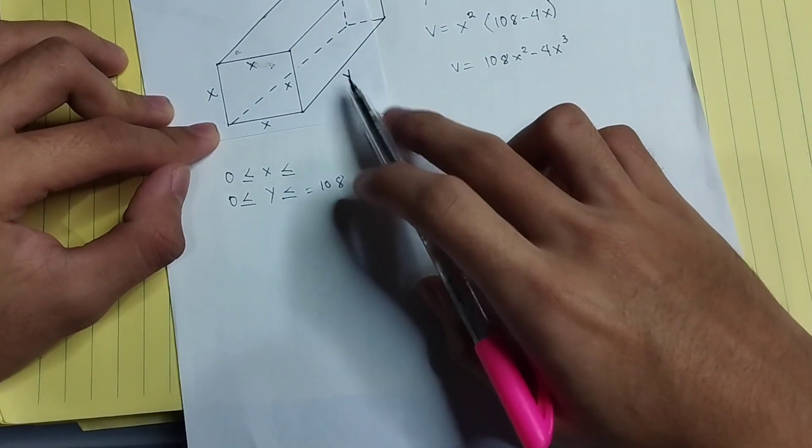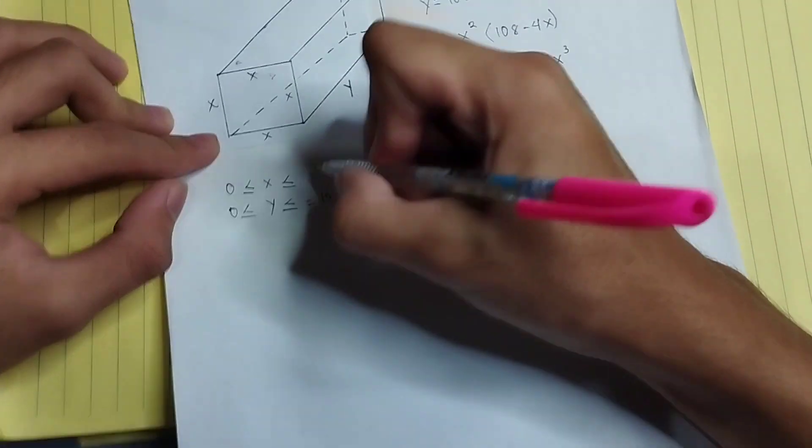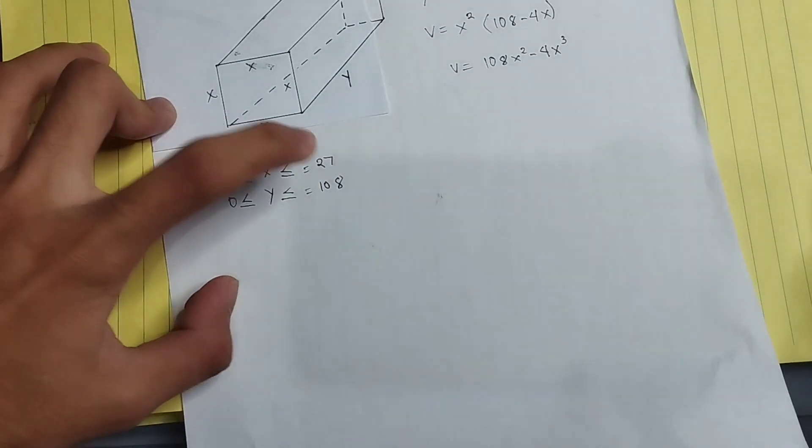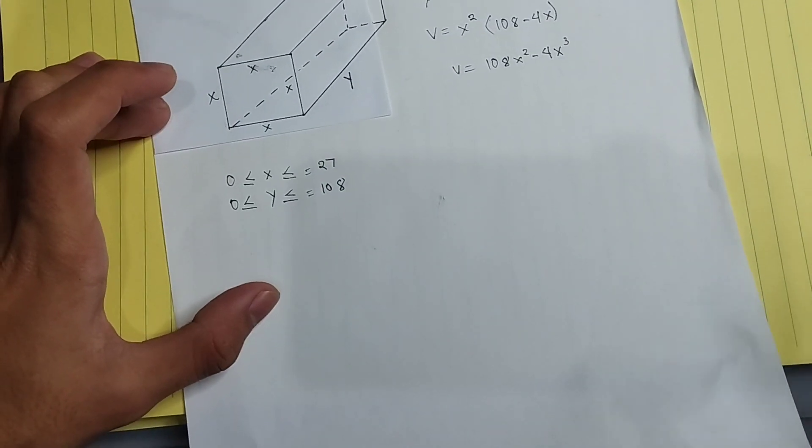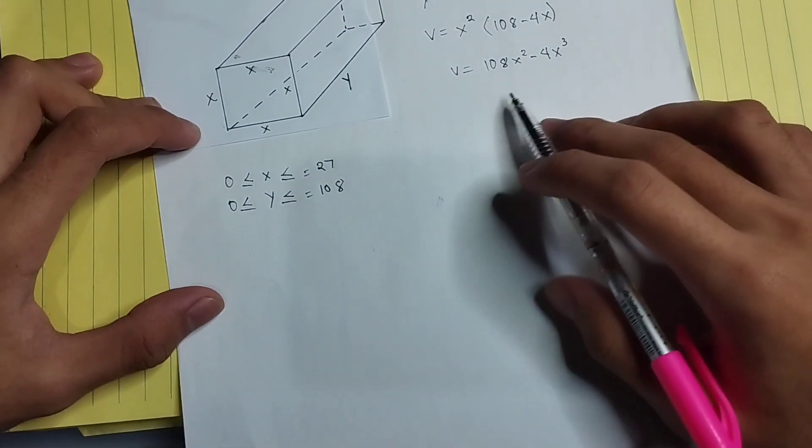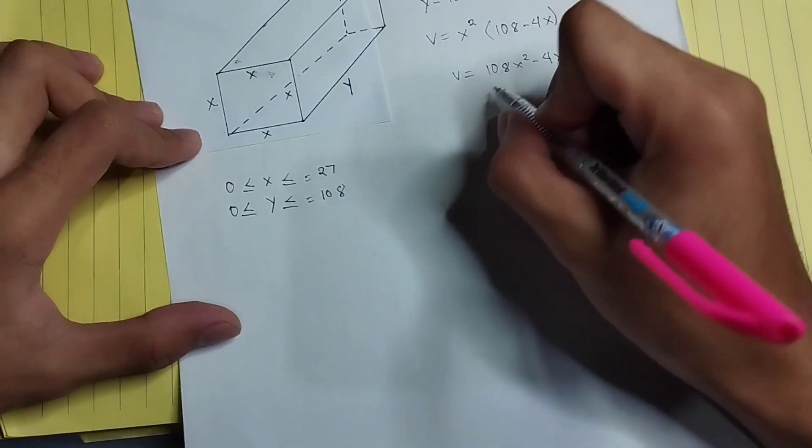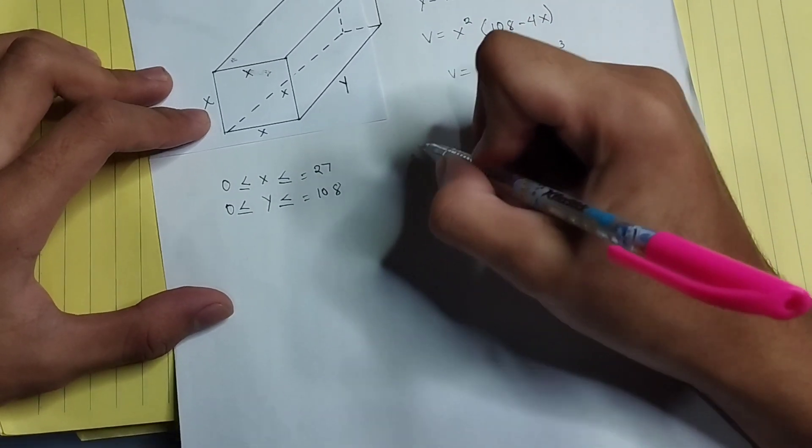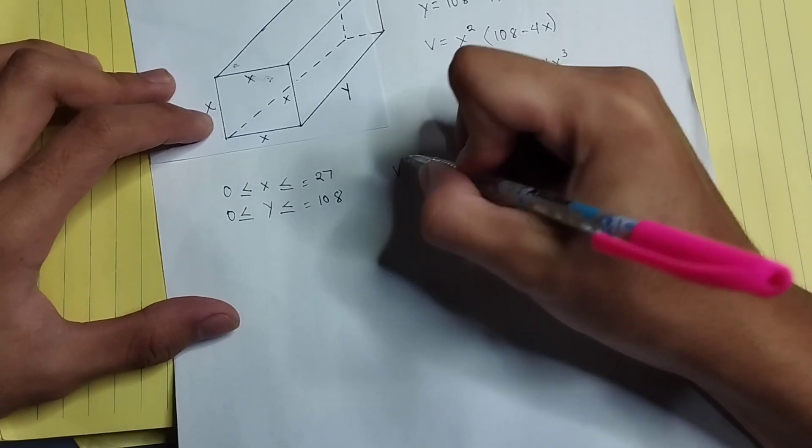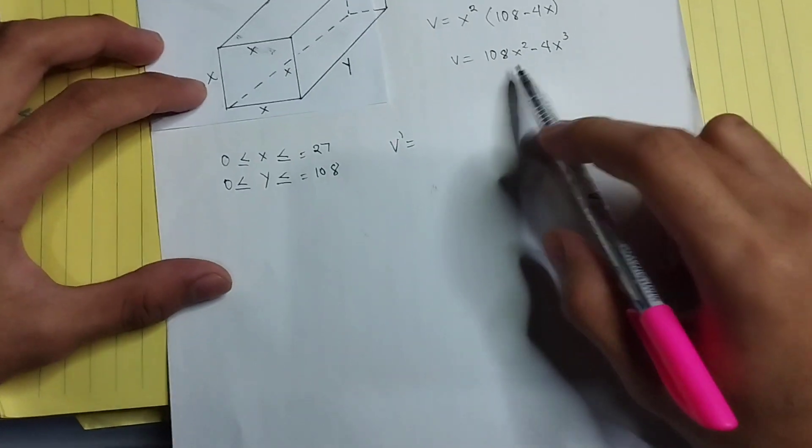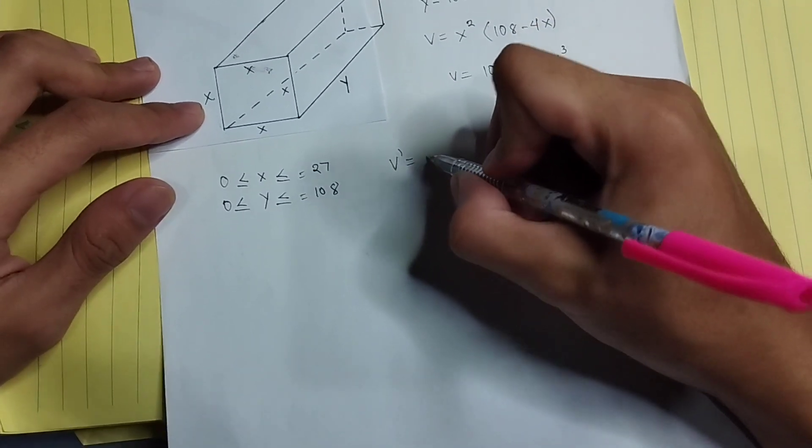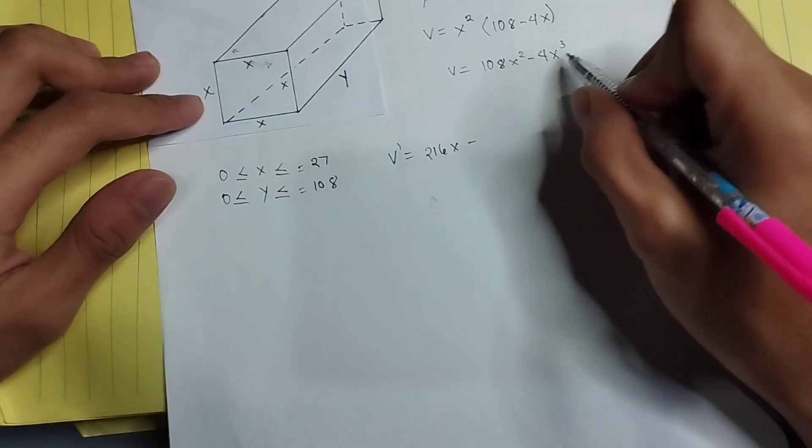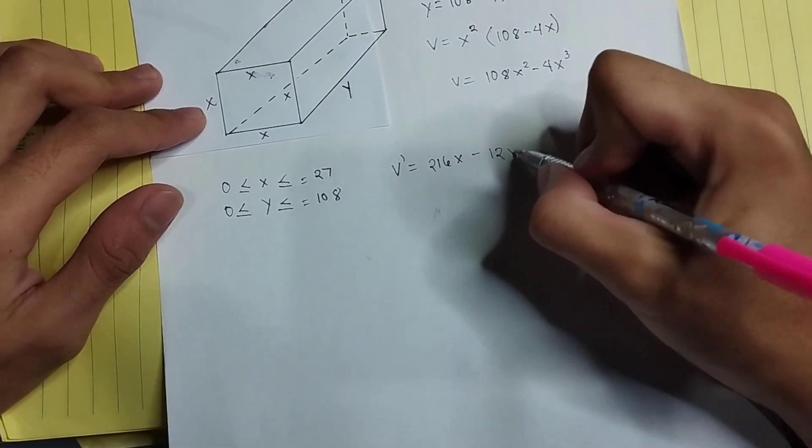After getting that example of domain, we can now differentiate these values. V prime equals the derivative of 108x squared, which is 216x, minus the derivative of 4x cubed, which is 12x squared.